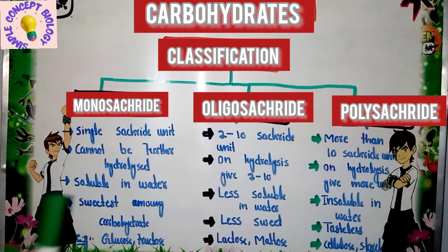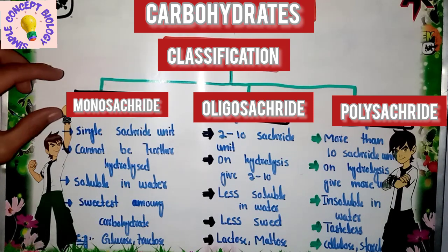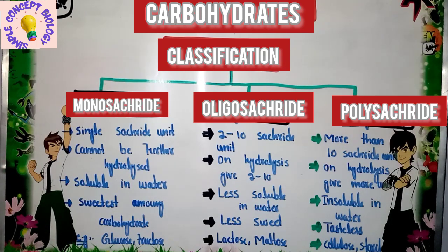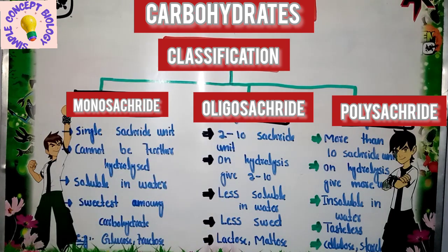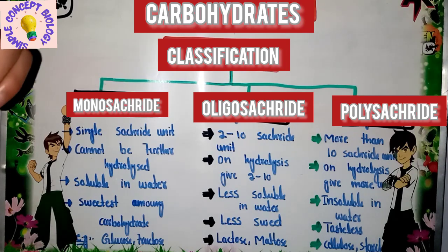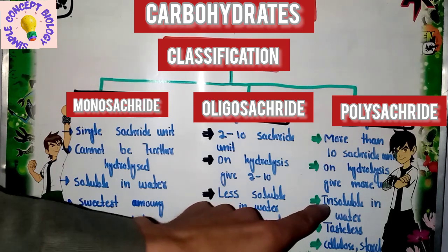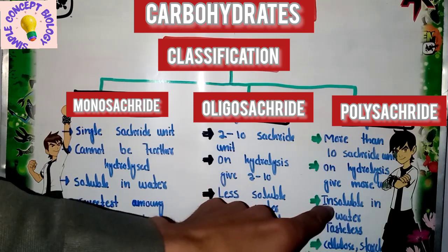Regarding solubility in water: monosaccharides are small in size and are easily soluble in water. As size increases going from monosaccharide to oligosaccharide to polysaccharide, solubility gradually decreases. Oligosaccharides are less soluble in water, and polysaccharides, which have tens of saccharide units, are completely insoluble in water.